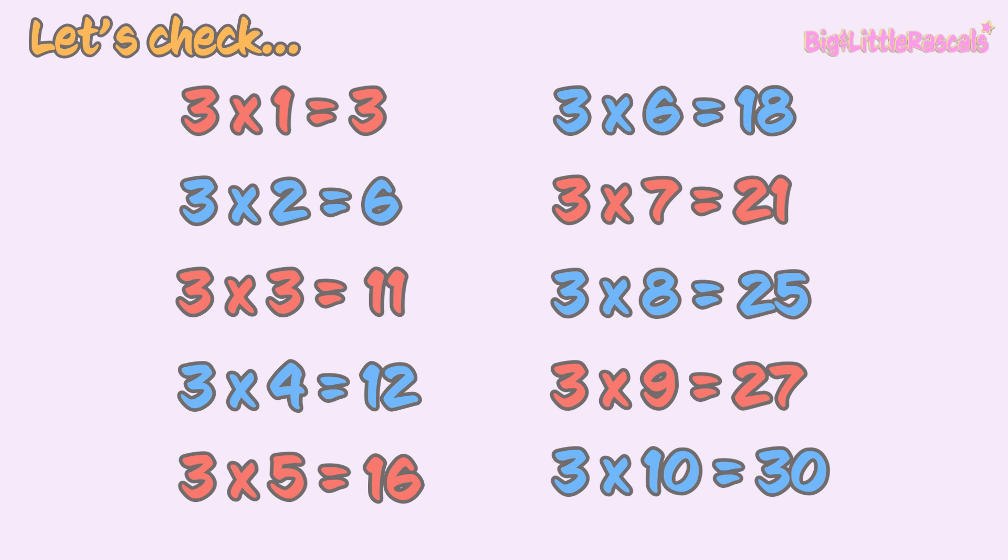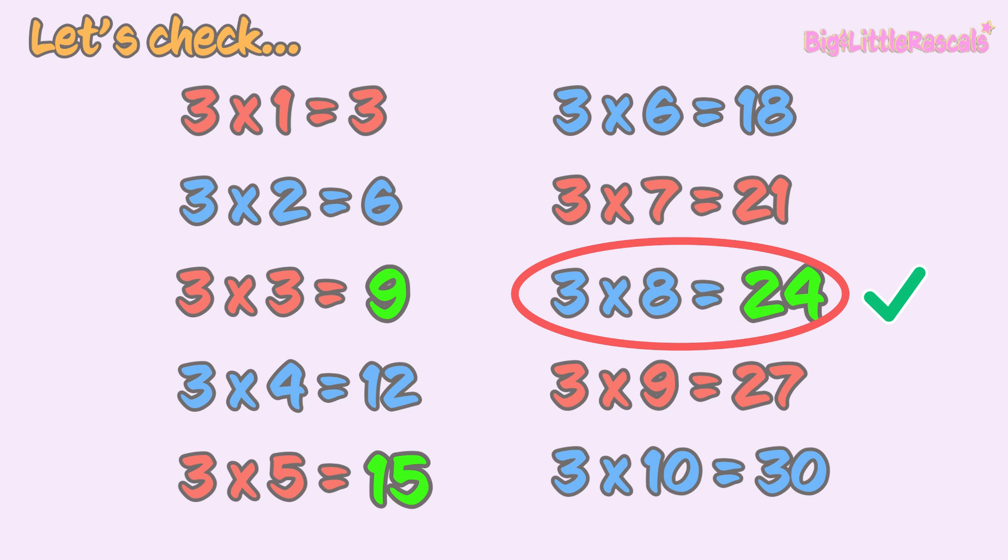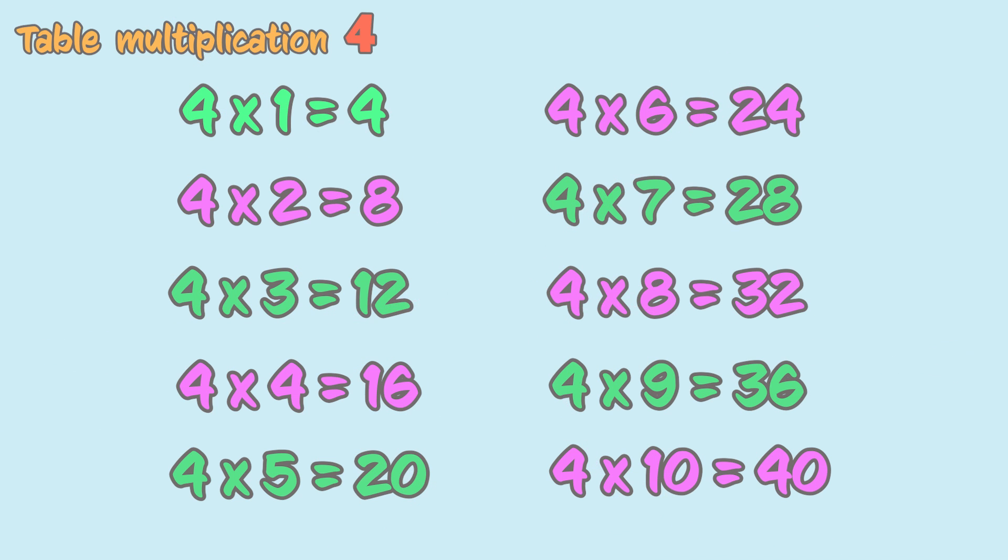Let's check! The first one I spot here is 3 times 3 equals 9, not 11. Then, 3 times 5 equals 15, not 16. Let's continue: 3 times 8 equals 24, not 25. So, there are 3 incorrect answers in this table. Well done everyone! You are doing so good! Great job everyone!